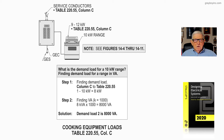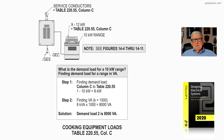Let's look at Figure 22-8 from Stalkup's Designing Electrical Systems, Volume 2. In the illustration we have the service conductors, Table 220.55, Column C. We have a range that falls in the size of 9-12 kW, so we can use Column C of 220.55, and a 10 kW range falls in that category of 9-12.